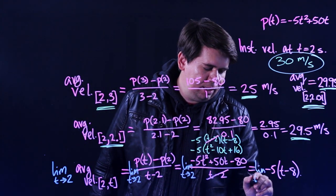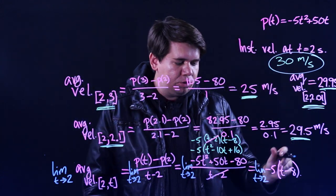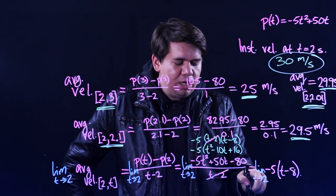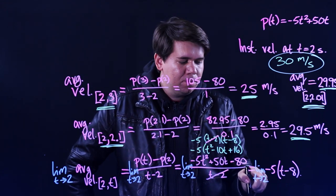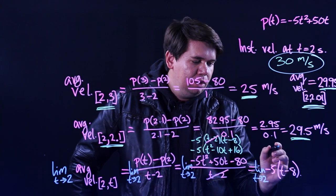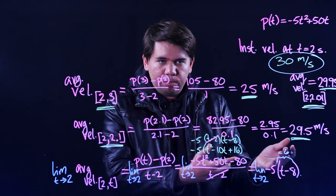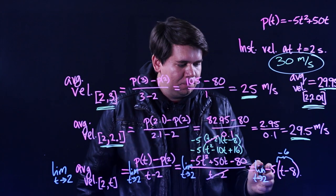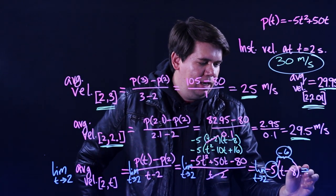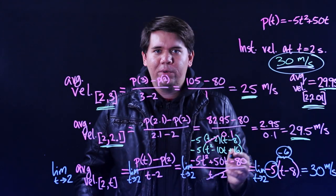What is the limit of this as t is getting closer and closer to 2? What's the limit as t gets closer and closer to 2? Now in upcoming videos, we'll talk more about how to analyze this. But just think, if you plug in a number really, really close to 2, then when you subtract 8 from it, it should be really, really close to minus 6. Right? If it's really close to 2 and you subtract 8, it should be really close to minus 6. And then you times that minus 6, by that minus 5, and you should come up with 30 meters per second, just like we expected.